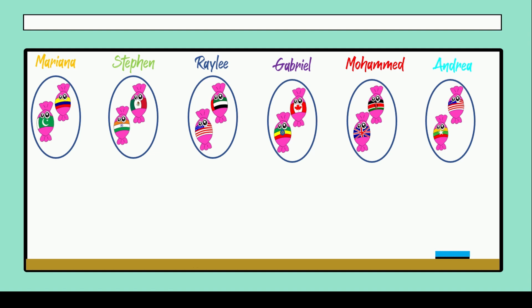As you can see, each student has two candies. Two for Mariana, two for Stephen, two for Riley, two for Gabriel, two for Mohammed and two for Andrea.